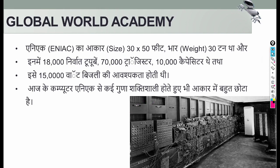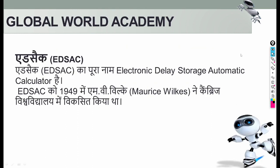Now, comparing these first-generation computers to today's computers and technology, they were much bigger in size. The full form for EDSAC is Electronic Delay Storage Automatic Calculator. It was designed for calculation purposes in 1949.